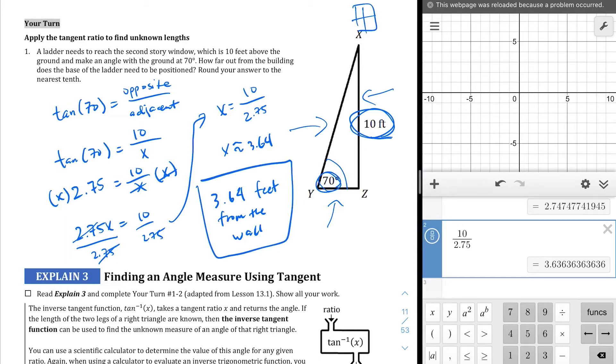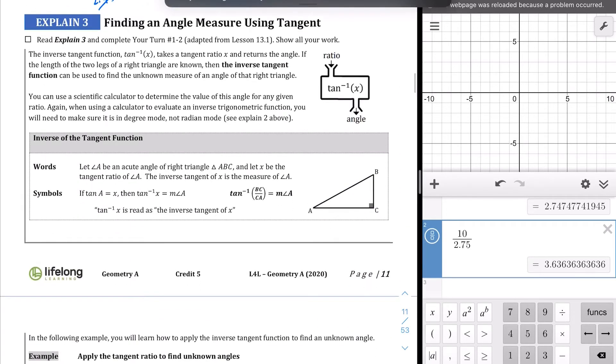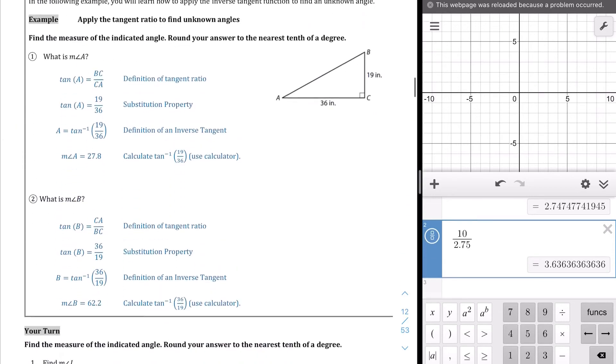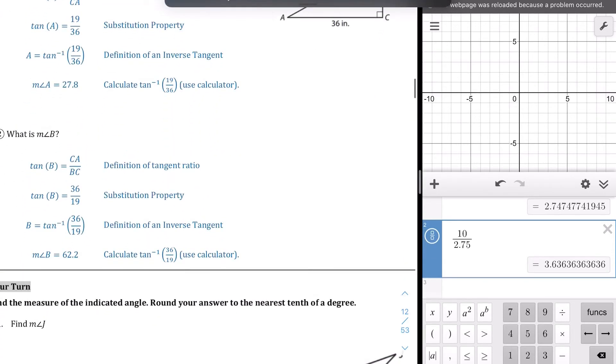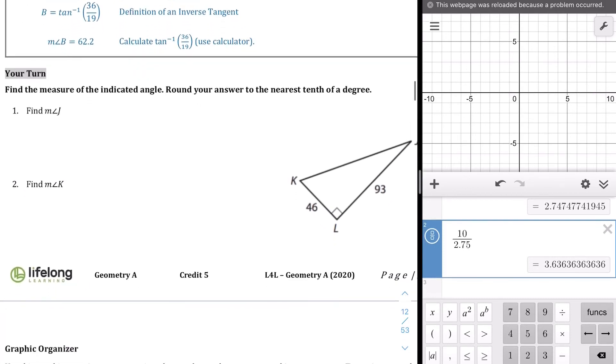That's our completed answer for Your Turn question number 1. We're going to do basically the inverse in this Explain 3 section. We're going to be taking the ratio to find the angle. You can again read the example on your own. And once you've done that, let's go ahead and jump into these questions here. We're given the side lengths in this case, and we're going to use that to find the missing angle.